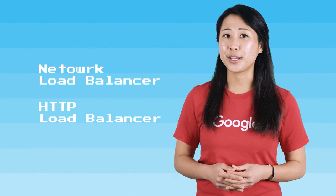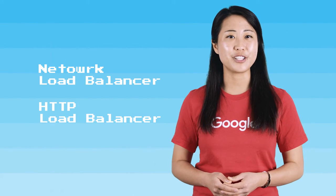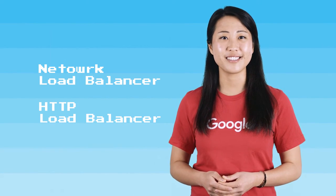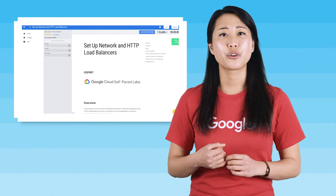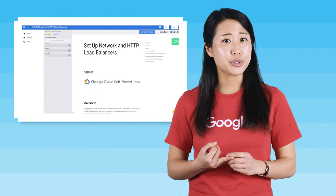This lab will take you through the steps to set up two types of load balancers in Google Cloud Platform: an L3 network load balancer and an L7 HTTPS load balancer. You will create an instance template with a specified startup script, create a target pool to allow a single access point to all instances in a group.